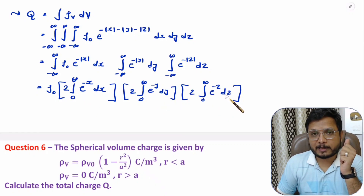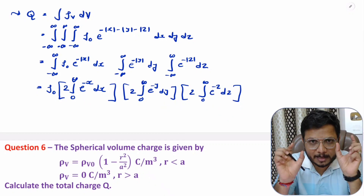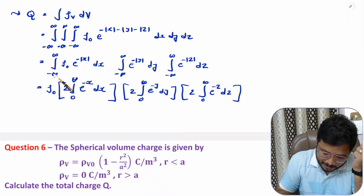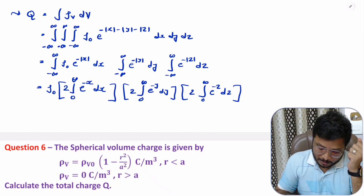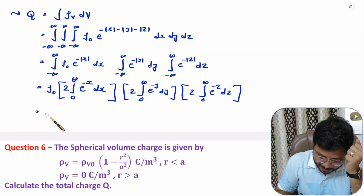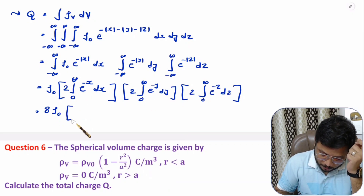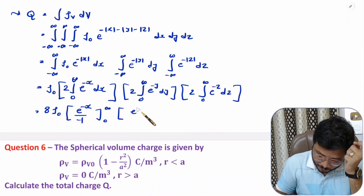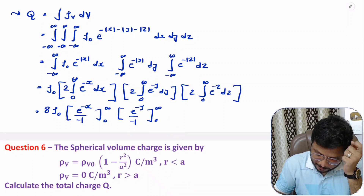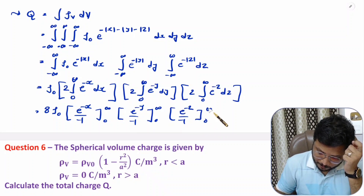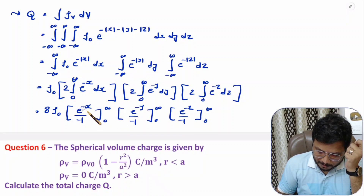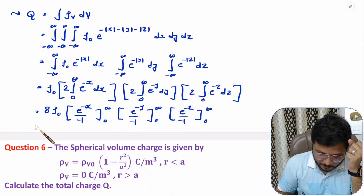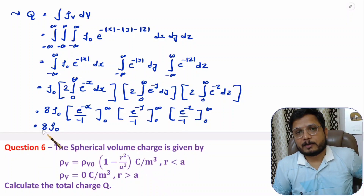So we multiply by 2 for x, 2 for y, and 2 for z, giving 8ρ₀ overall. The integral of e^(−x) from 0 to ∞ is [e^(−x)/(−1)] from 0 to ∞. At ∞ the value is 0, and at 0 it is −1, so the result is 0 − (−1) = 1. Similarly for y and z. Therefore 1 × 1 × 1 = 1, and the total charge is 8ρ₀.